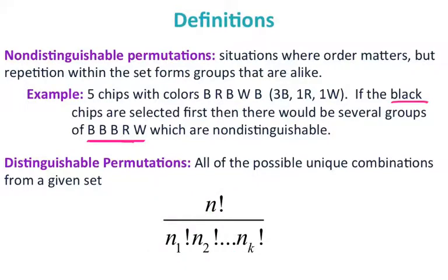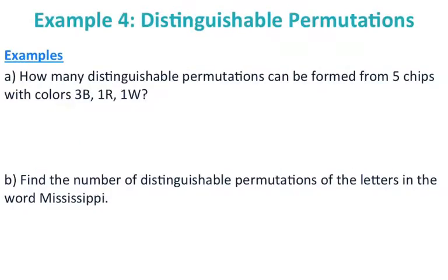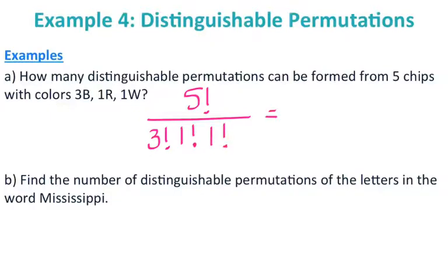How many distinguishable permutations can be formed from 5 chips with colors 3 black, 1 red, and 1 white? Total chips is 5, so the numerator is 5 factorial. The denominator is 3 factorial for the 3 black chips, times 1 factorial for red, times 1 factorial for white. Plugging into the calculator gives 20. So there are 20 distinguishable permutations for those 5 chips.